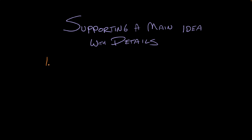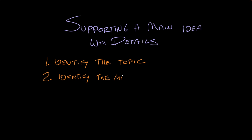First, identify the topic — what is the text mainly about? Then ask, what's the author's big idea? What are they trying to say about the topic? This will be your main idea. And finally, find details that support that main idea. I'll show you how to do that with this text.